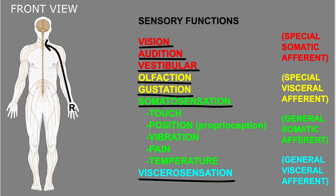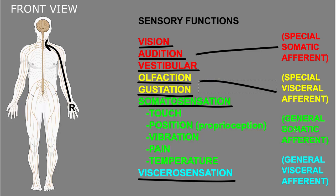There is another classification system for neurons carrying these types of information that I generally prefer not to use, but I'll mention these terms so you know them. Special somatic afferent refers to vision, audition, and vestibular senses. Special visceral afferent refers to olfaction and gustation. General somatic afferent refers to somatosensation, and general visceral afferent refers to viscerosensation.